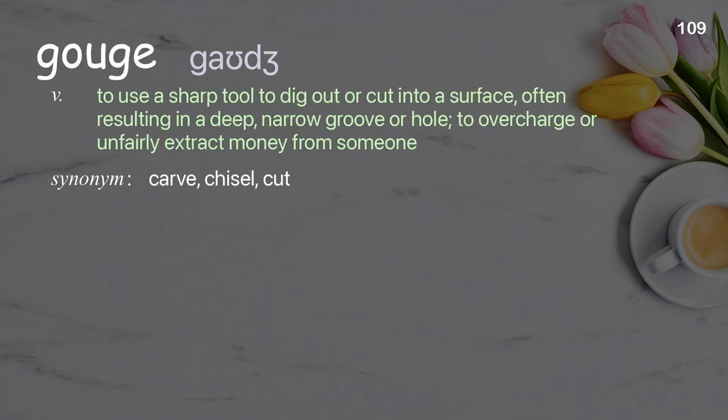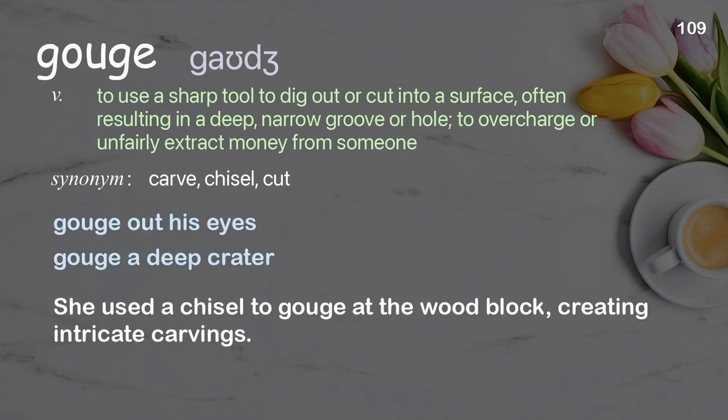Gouge: to use a sharp tool to dig out or cut into a surface, often resulting in a deep, narrow groove or hole; to overcharge or unfairly extract money from someone. Examples: gouge out his eyes, gouge a deep crater. She used a chisel to gouge at the wood block, creating intricate carvings.